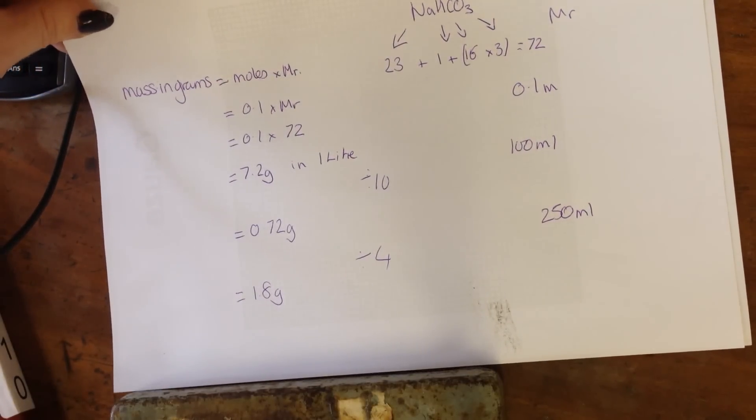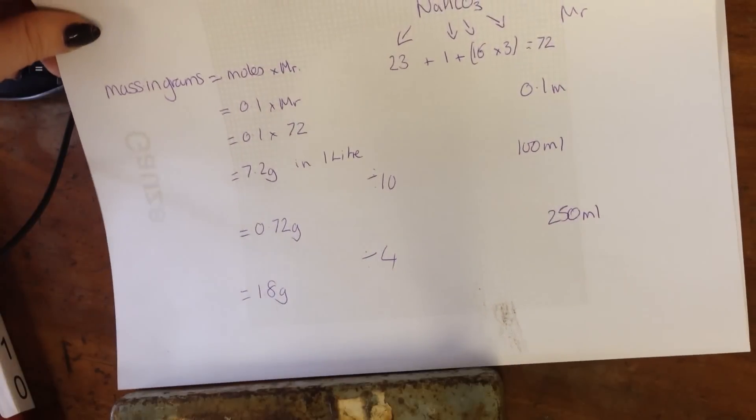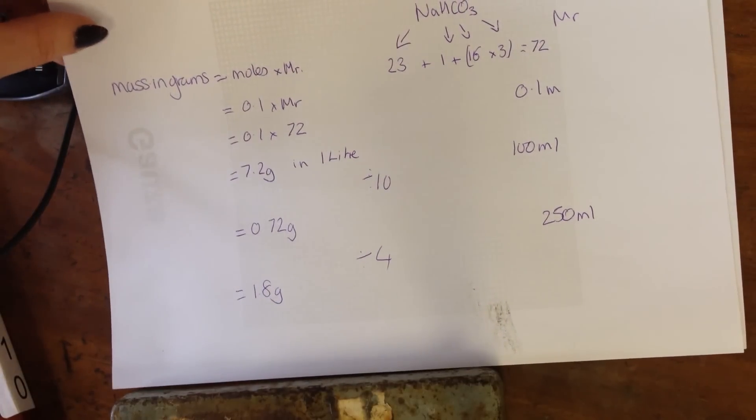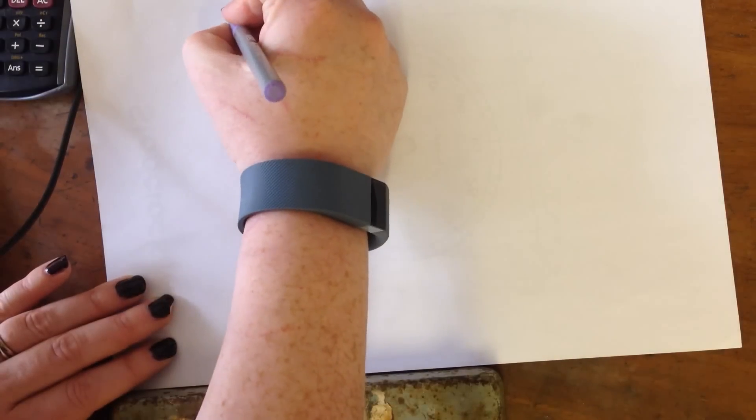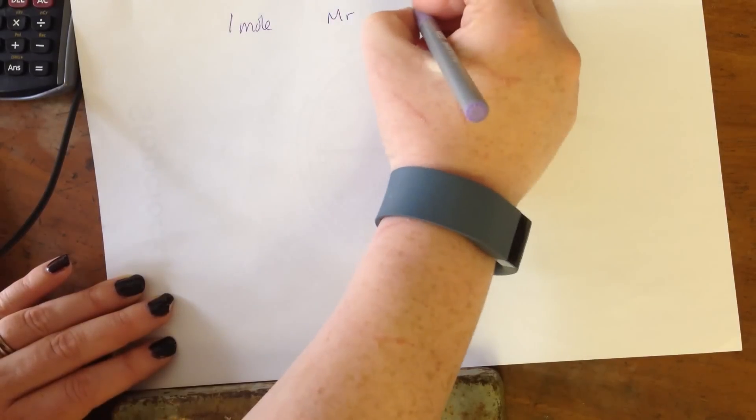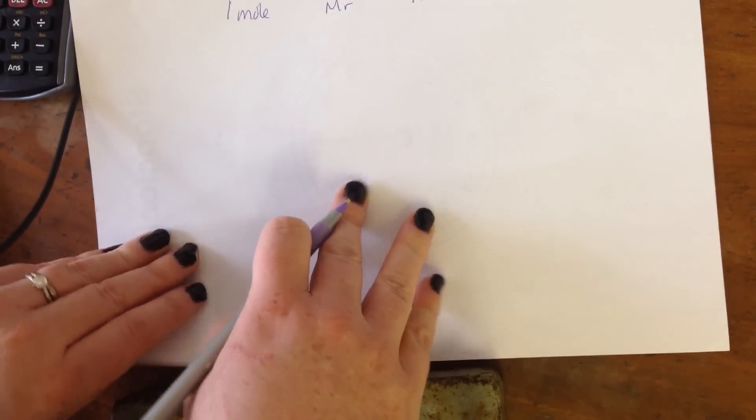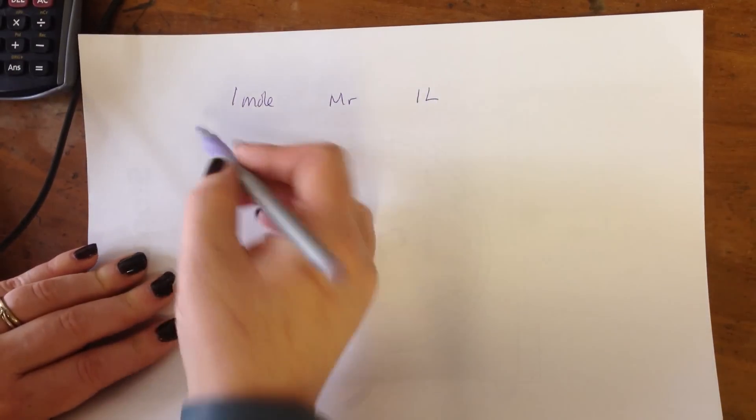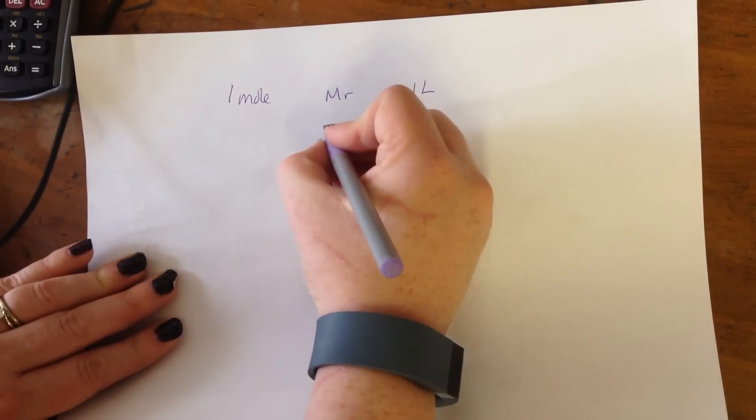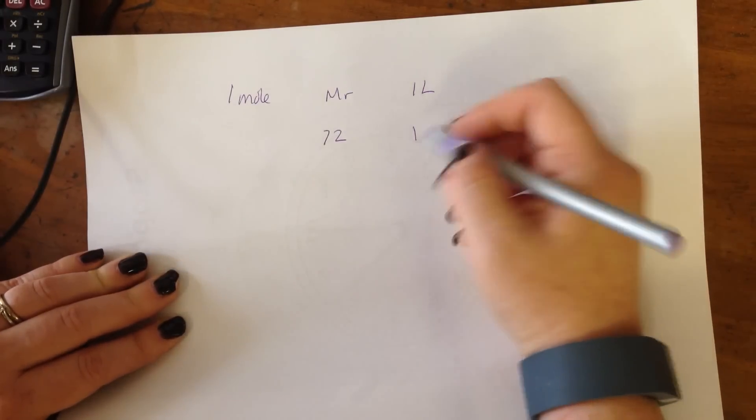Another way of doing it also works quite well. It's the way that I used to do it in the lab. It's not the official textbook way, but it will also work. For a 1 mole solution, we need the MR in 1 liter. So if the MR is 72 and we have 1 liter, that's going to be 1 mole.